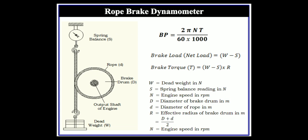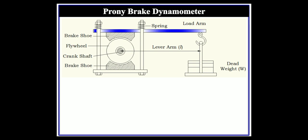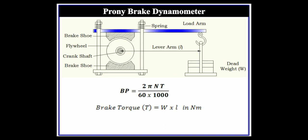In this way brake power can be calculated using the rope brake dynamometer. In the prony brake dynamometer, there is a lever arm of length L attached to a dead weight hanger with weight W. The offset distance equals the lever arm length L. The torque is calculated accordingly, and substituting into BP = 2πNT gives the brake power.